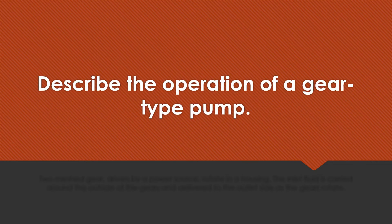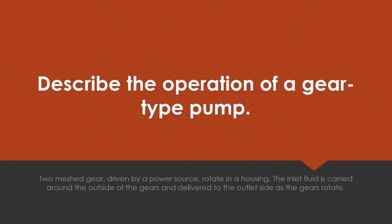Describe the operation of a gear-type pump. Two meshed gears driven by a power source rotate in a housing. The inlet fluid is carried around the outside of the gears and delivered to the outlet side as the gears rotate.